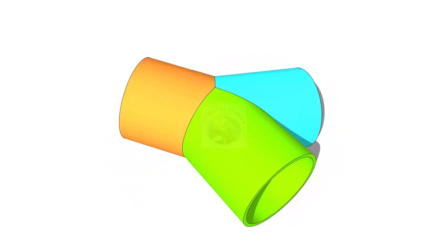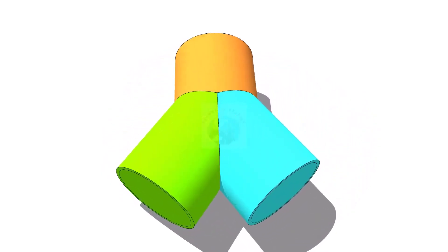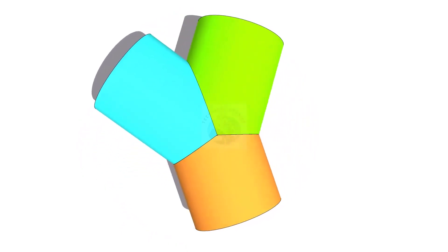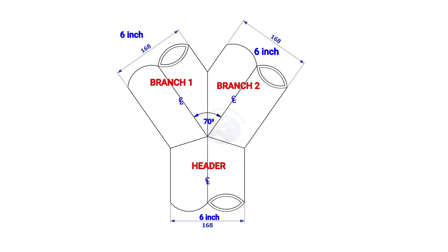Welcome to the technical studies. In this video we will learn how to lay out a Y branch. The size of the Y branch in this example is 6 inches and the included angle is 70 degrees.